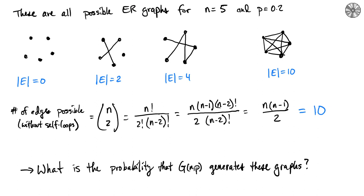All four of these small networks have five nodes, and all four could be possible outcomes of an ER graph with n=5 and p=0.2 — a 20% chance of adding any given edge. It's possible to flip a coin five times and get five tails, giving the empty graph. Likewise, you could get five heads, connecting all possible node pairs — the complete graph. Typically we see something in between.